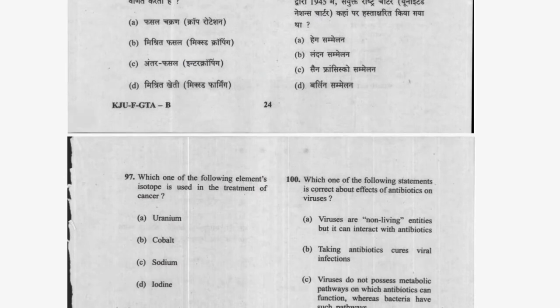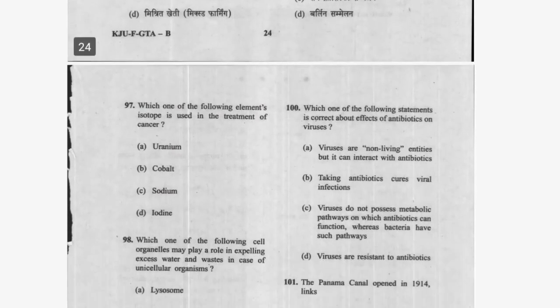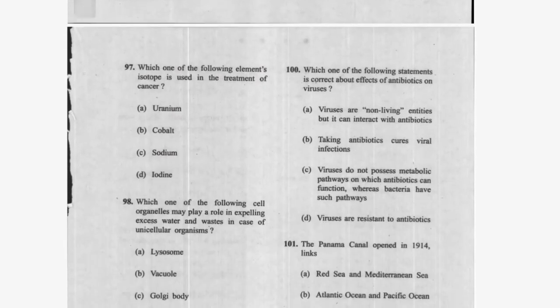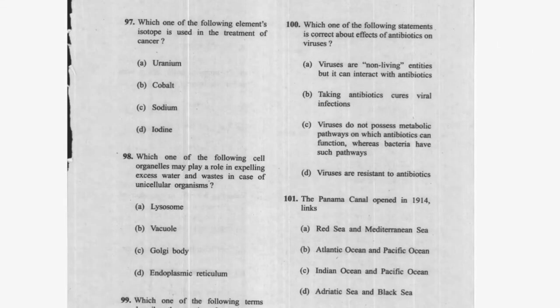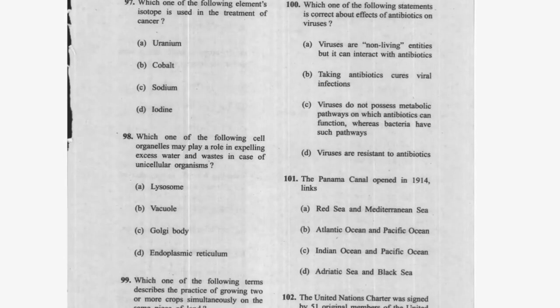Question 94: Which element is used in the treatment of cancer? Cobalt-60 — option C. Question 95: Which cell organelle plays a role in expelling excess water and waste in unicellular organisms? The answer is vacuole — option B is correct.